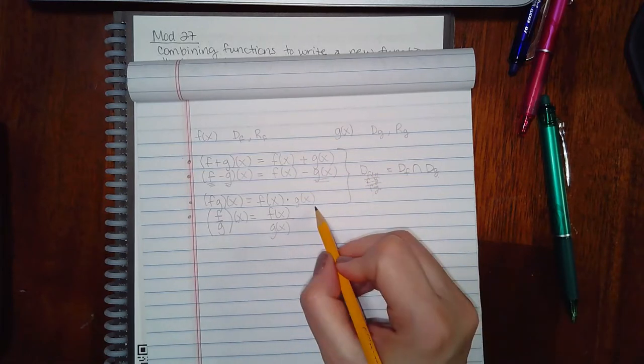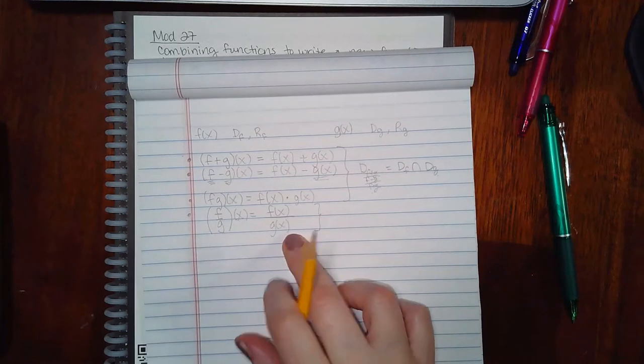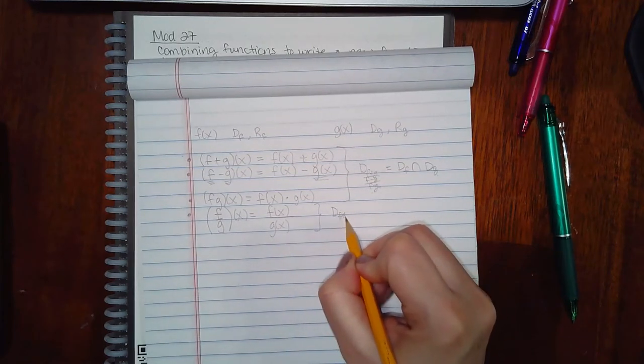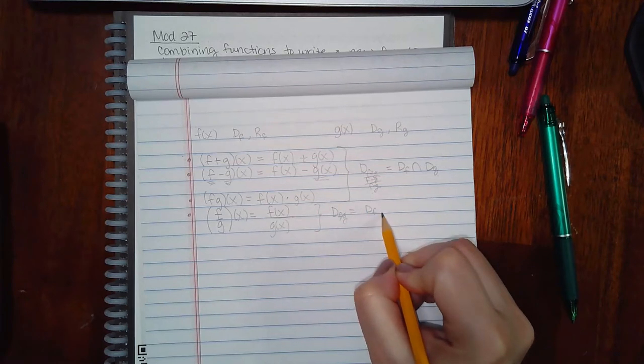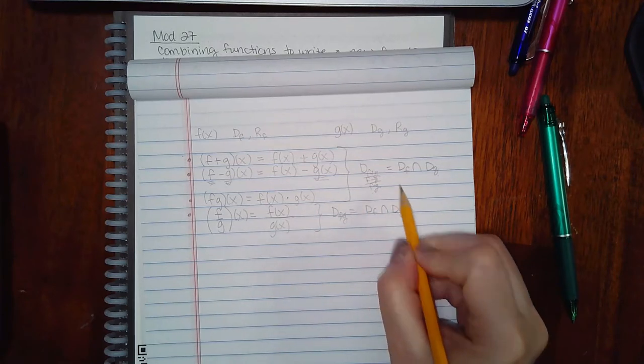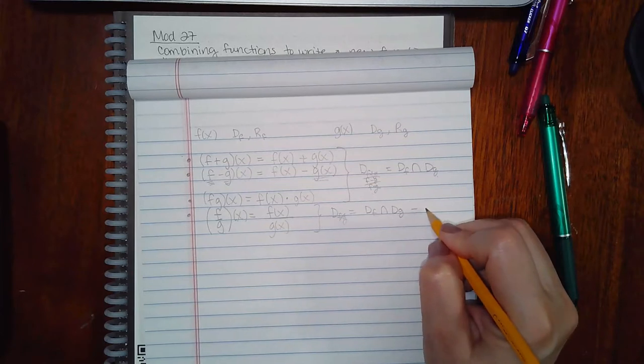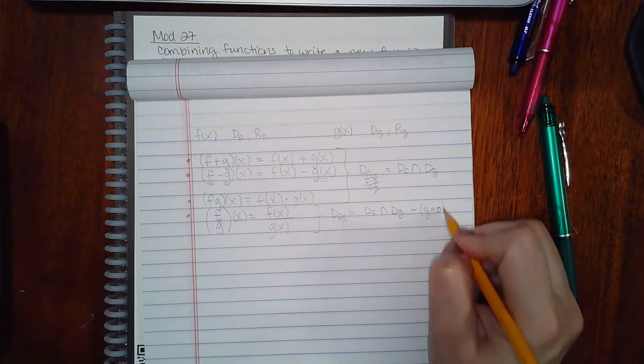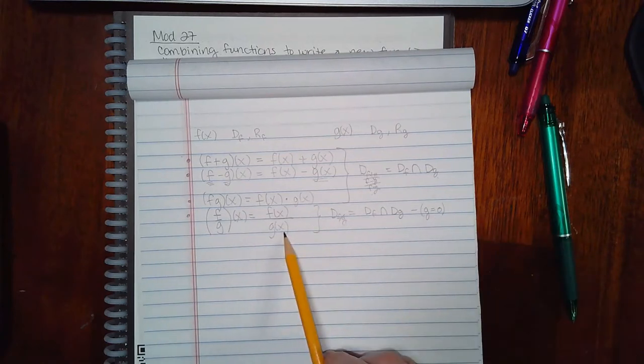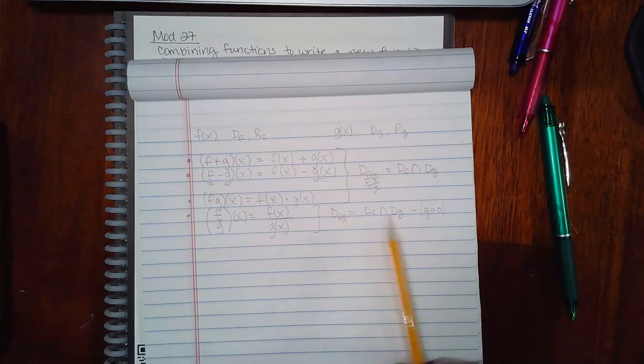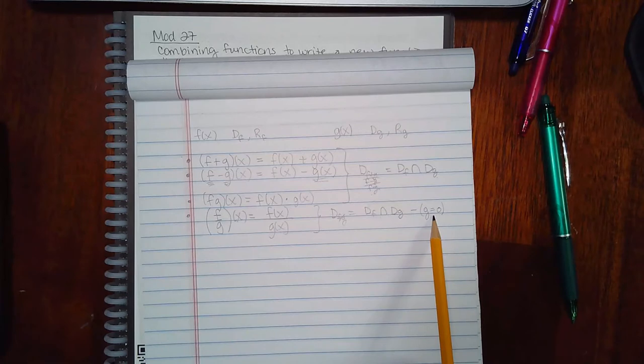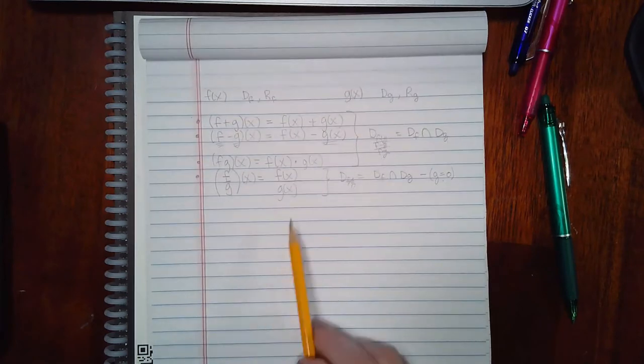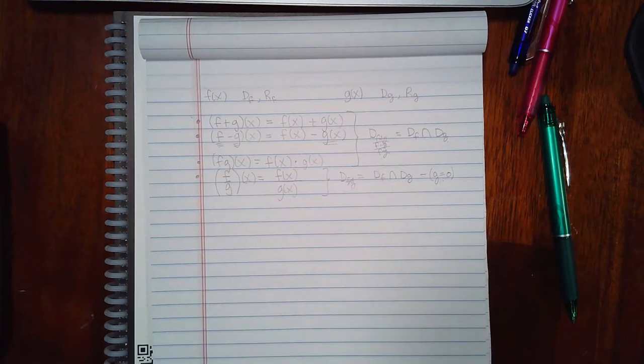This one is different because we have a fraction. So yes, if you want to do f over g, you do get the domain of f intersect with the domain of g, like you do with all these others. But you have to take out where g is equal to zero, because you cannot have g of x equal to zero. So once you figure out what this interval looks like, you're going to basically remove any x values that make the denominator zero. And the denominator is g, so you find all the values of g that equals zero.